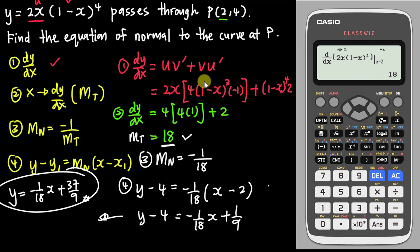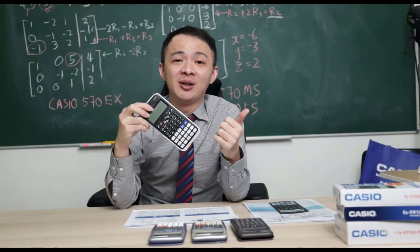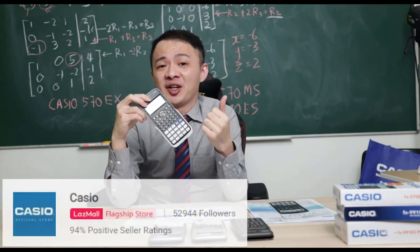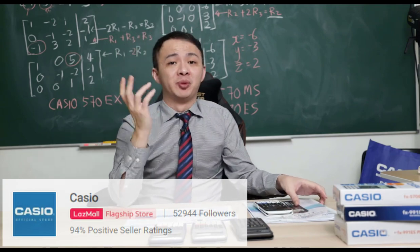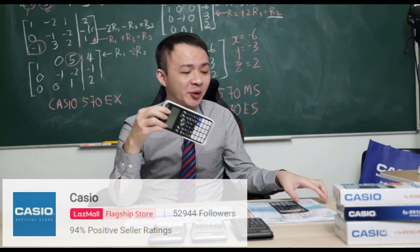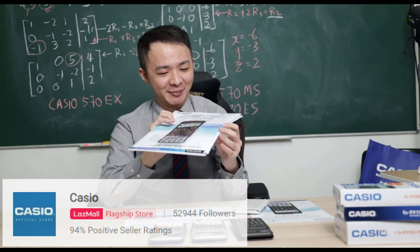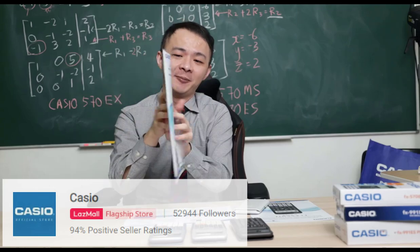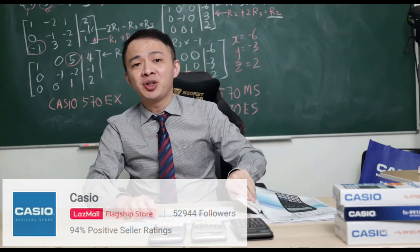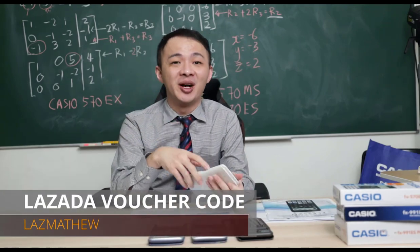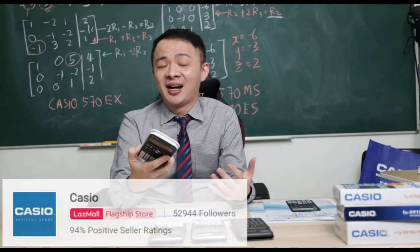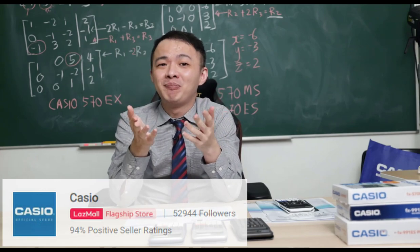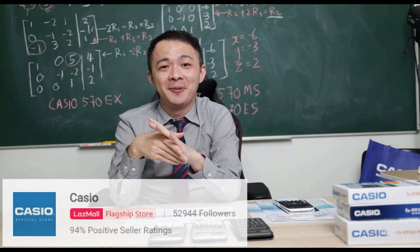I hope you find this video helpful. If you're interested in buying this calculator, I'll share the Lazada link in the description below — it leads to the Casio flagship store. Right now Casio Malaysia is running a promotion where you get a free Casio alpha pouch, which is waterproof, with your purchase. Also, use the promotion code in my description for an additional five ringgit discount. If you have any questions, post them in the comments below, and I'll see you in the next video. Bye!